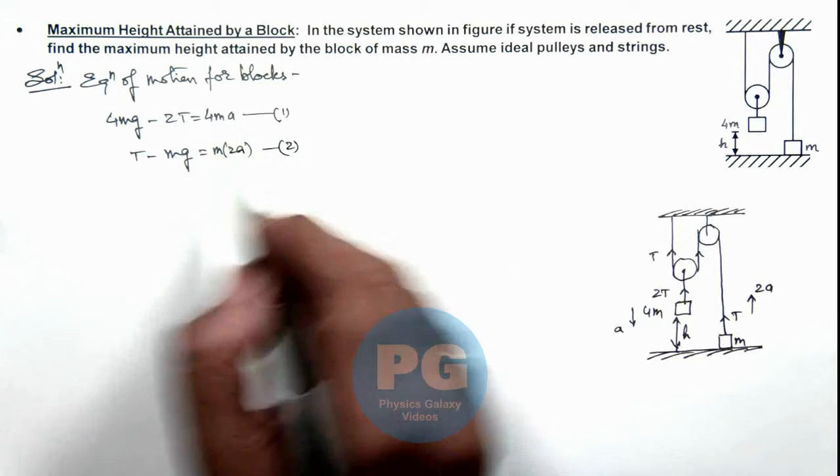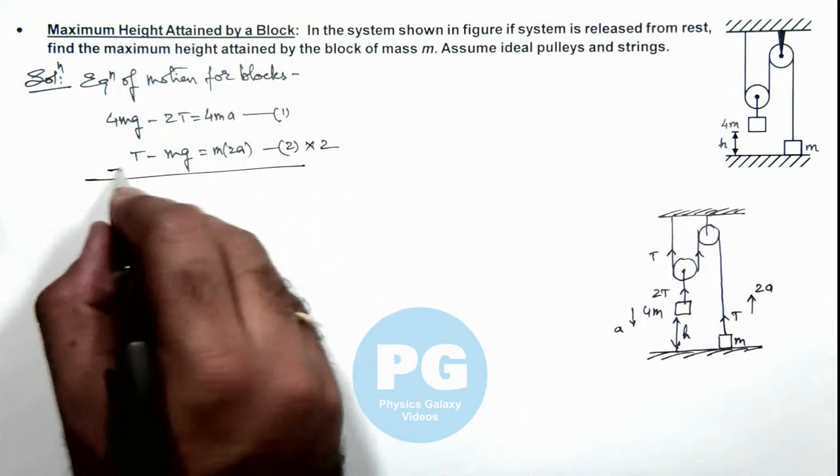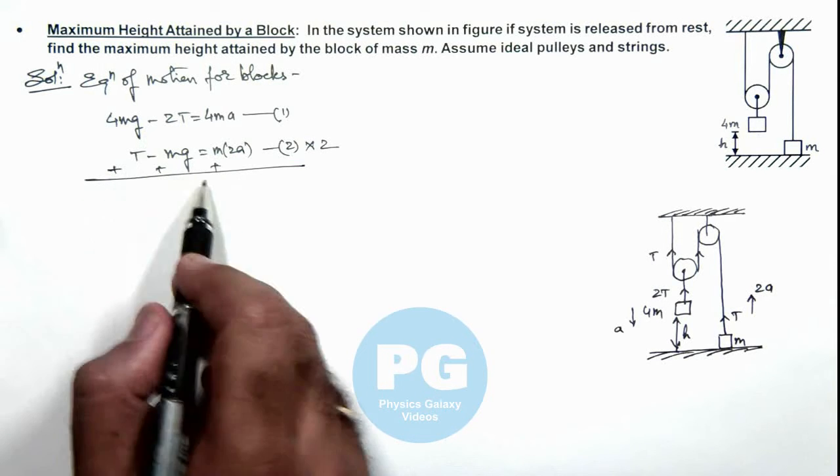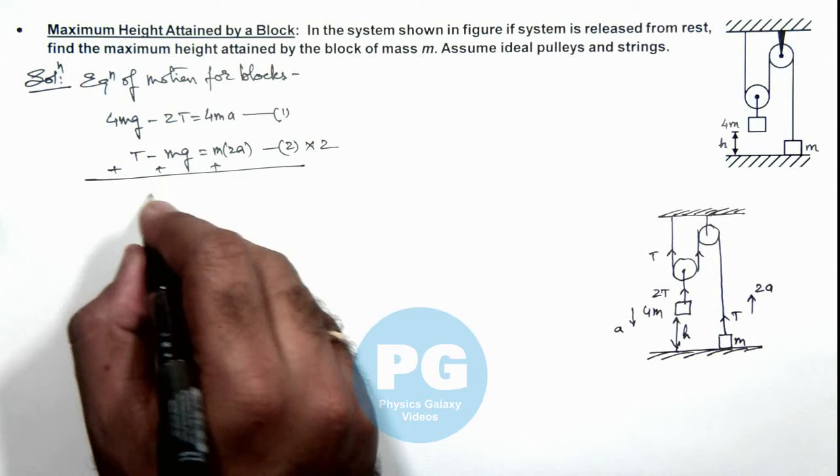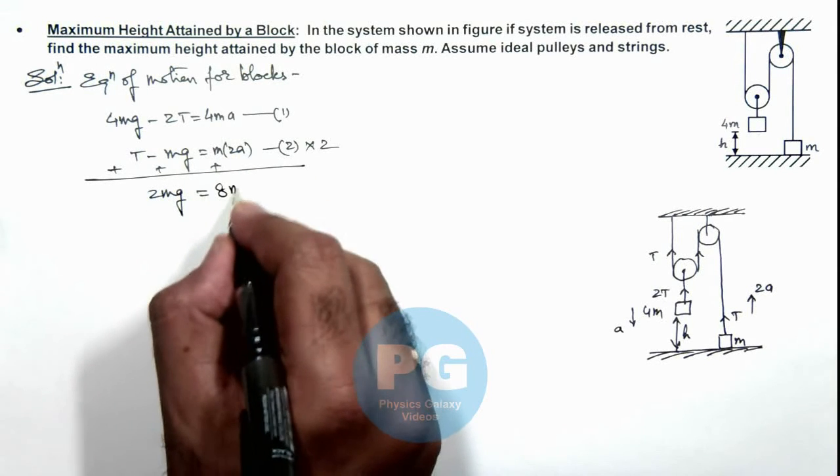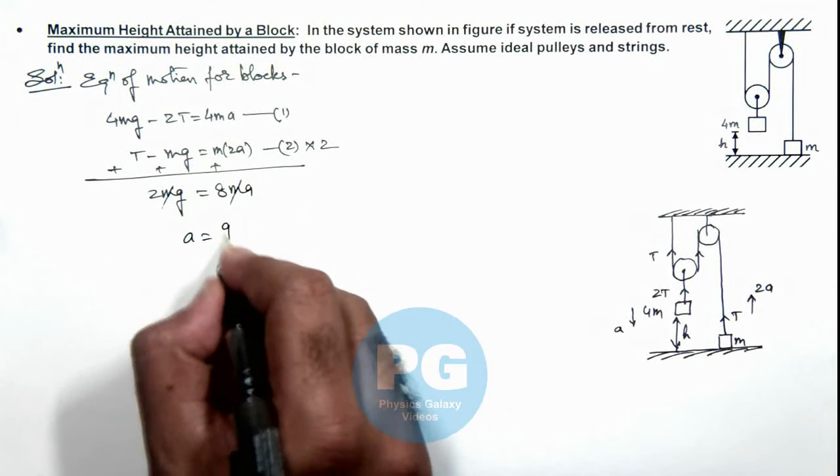Now to get the value of acceleration, we multiply equation 2 by 2 and add these equations. If we add, t gets cancelled out. On the left hand side we get 4mg minus 2mg equals 2mg, which equals 8may. Therefore, acceleration ay is g by 4.